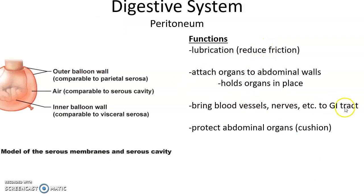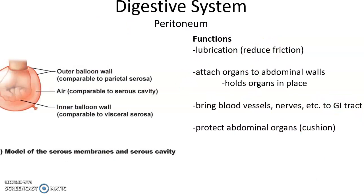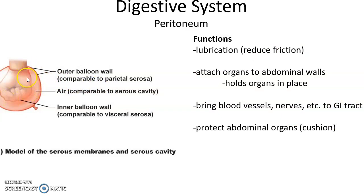Lubrication and reducing friction — a serous membrane has two layers: one lying on the organ, the other away from the organ, and in between those layers is a space filled with serous fluid. So lubrication and reducing friction — very important.